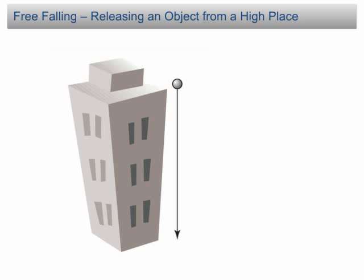Free falling — releasing an object from a high place. Before solving a free falling problem, we need to determine which direction we want to take as positive. We can take any direction as positive. However, I will always advise you to take the direction of the initial movement as the positive. For example, in this case, the ball is moving downward, hence we take downward as the positive direction.